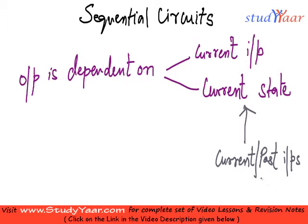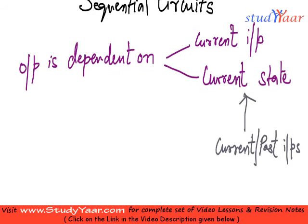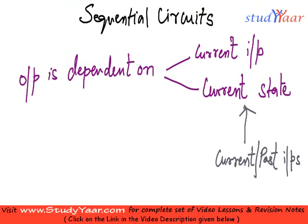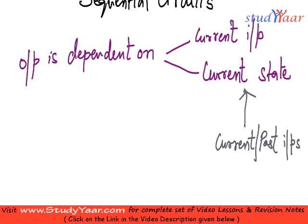So we can say that a sequential circuit is composed of both current input and past inputs, and these two together determine your current output. To store this state, you have something called state memory. Your current state is stored in state memory.